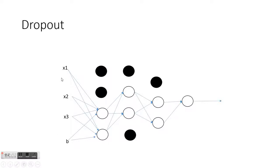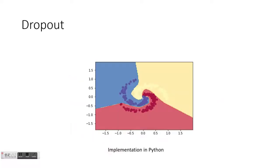We keep dropping random activation units during forward and backward propagation and compute the weights to perform gradient descent. An important point is that the units dropped in the forward propagation cycle must also be dropped in the backward propagation cycle. This technique tends to prevent overfitting. Here is an implementation in Python using the dropout technique on the spiral dataset.